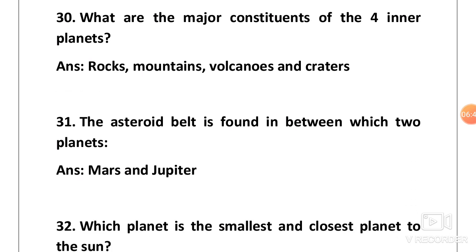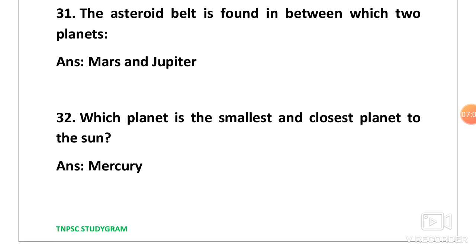Next one, what are the major constituents of the 4 inner planets? Inner or terrestrial planets we saw, Mercury, Venus, Earth and Mars. What are the major constituents of them? Answer is rocks, mountains, volcanoes and craters.